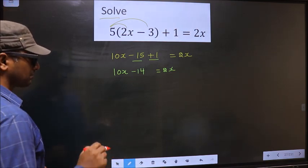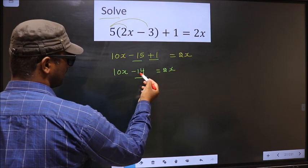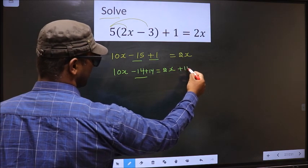What I mean is minus 14 should not be present here. To remove minus 14, you add 14 on both sides.